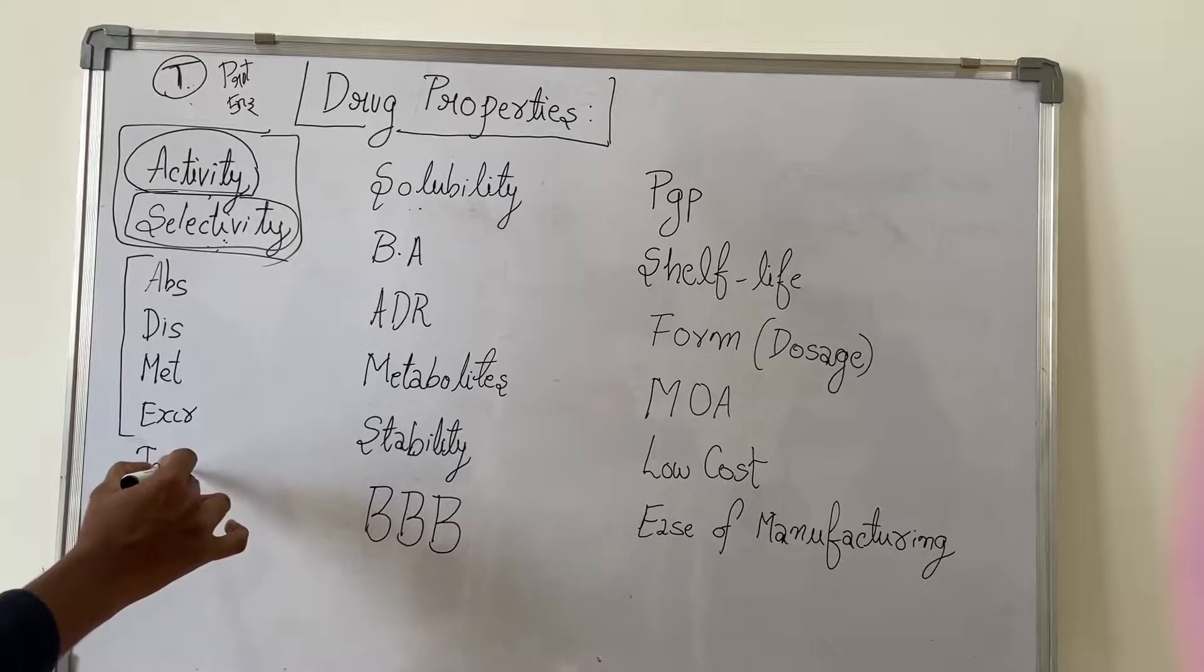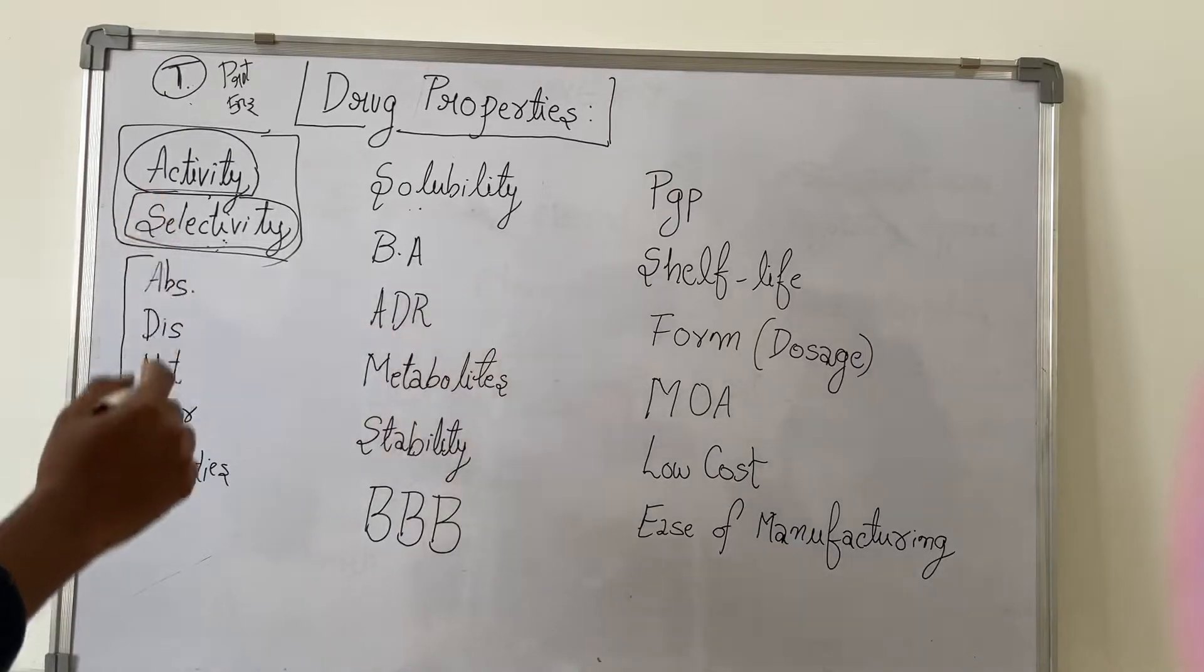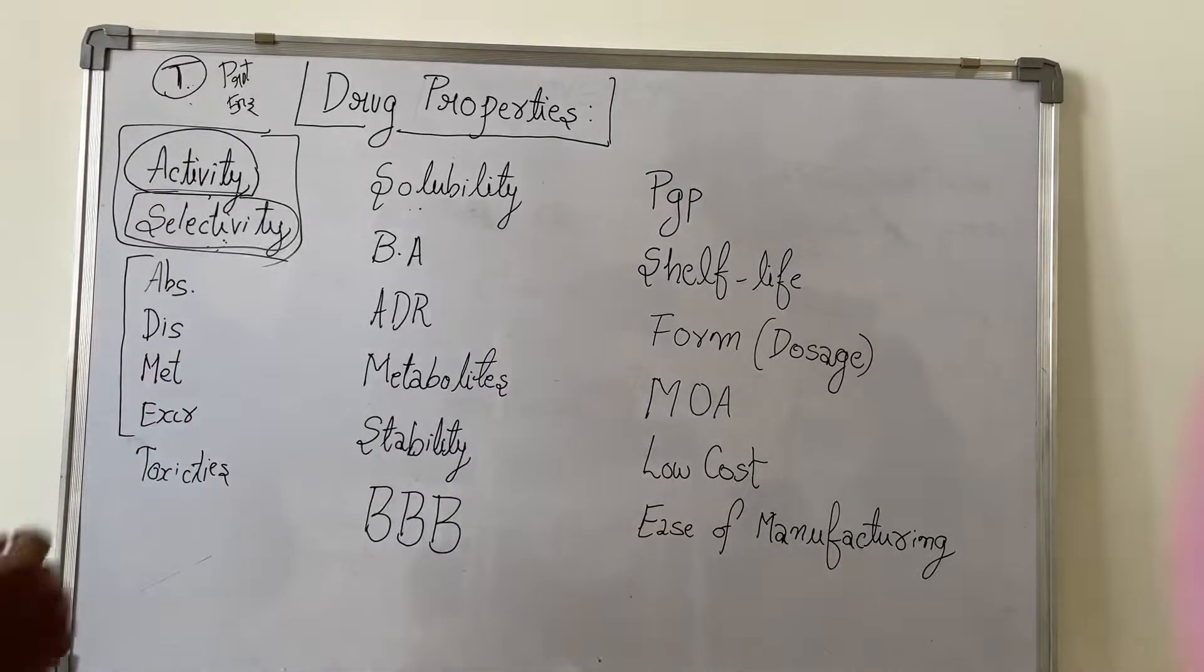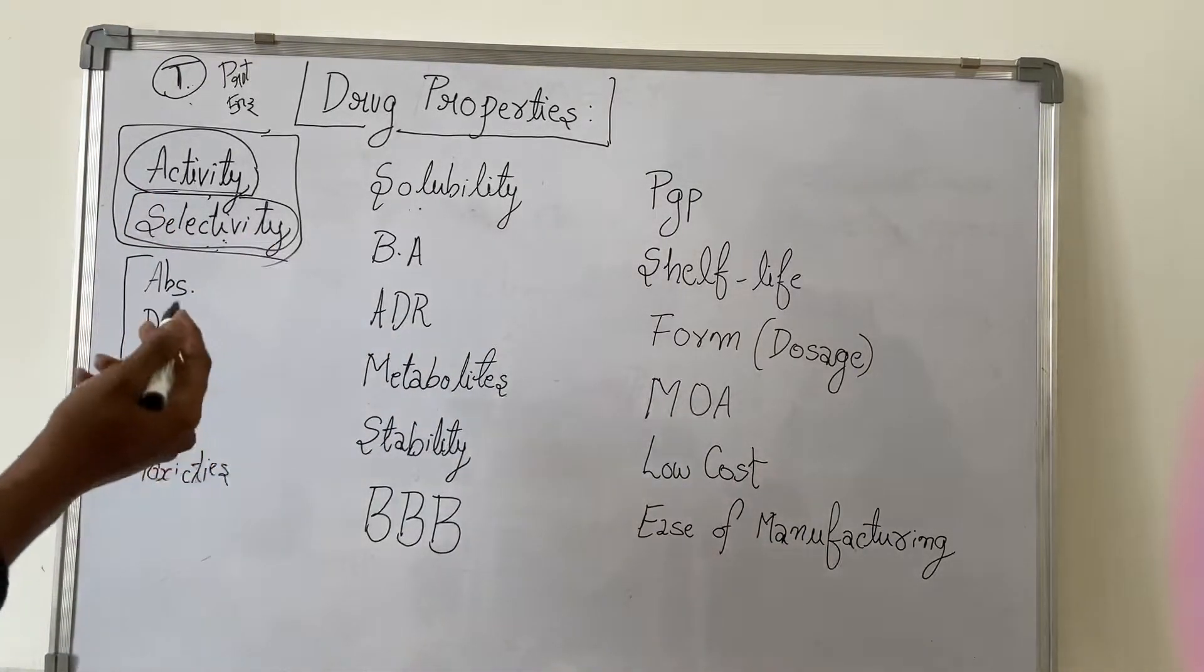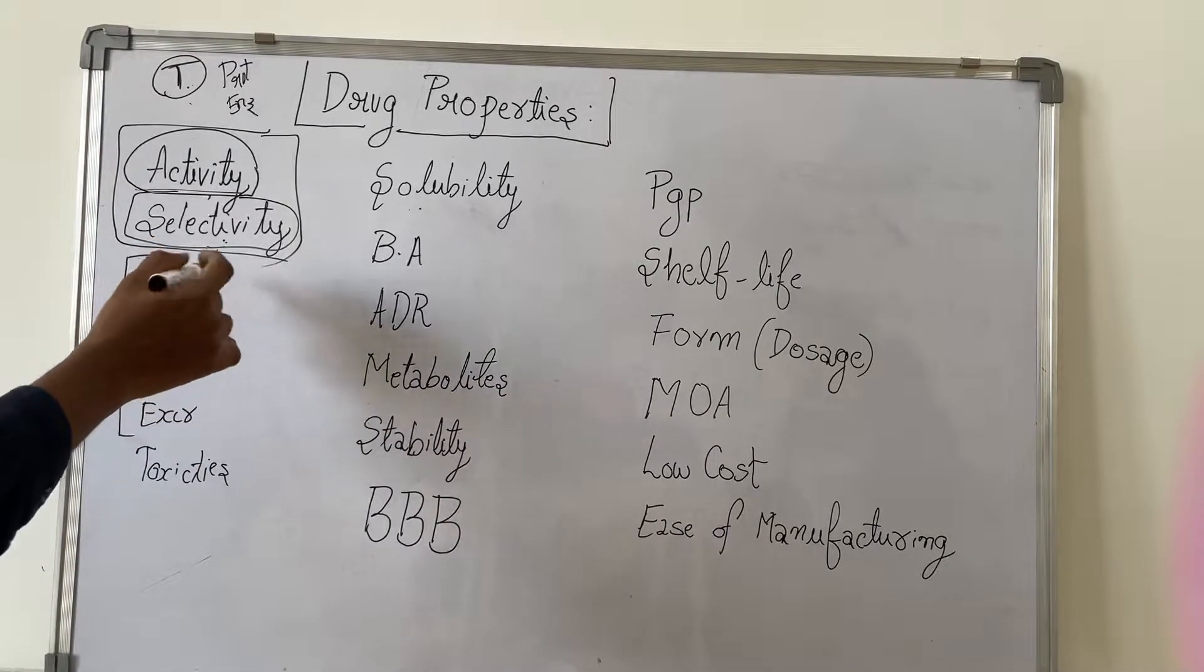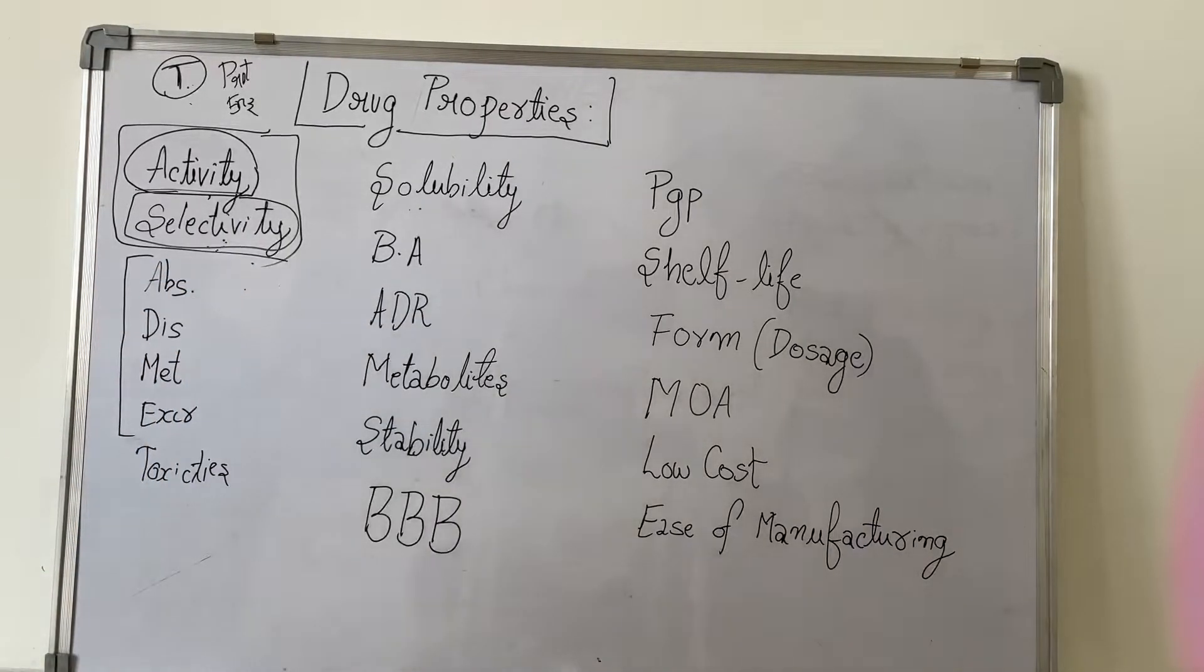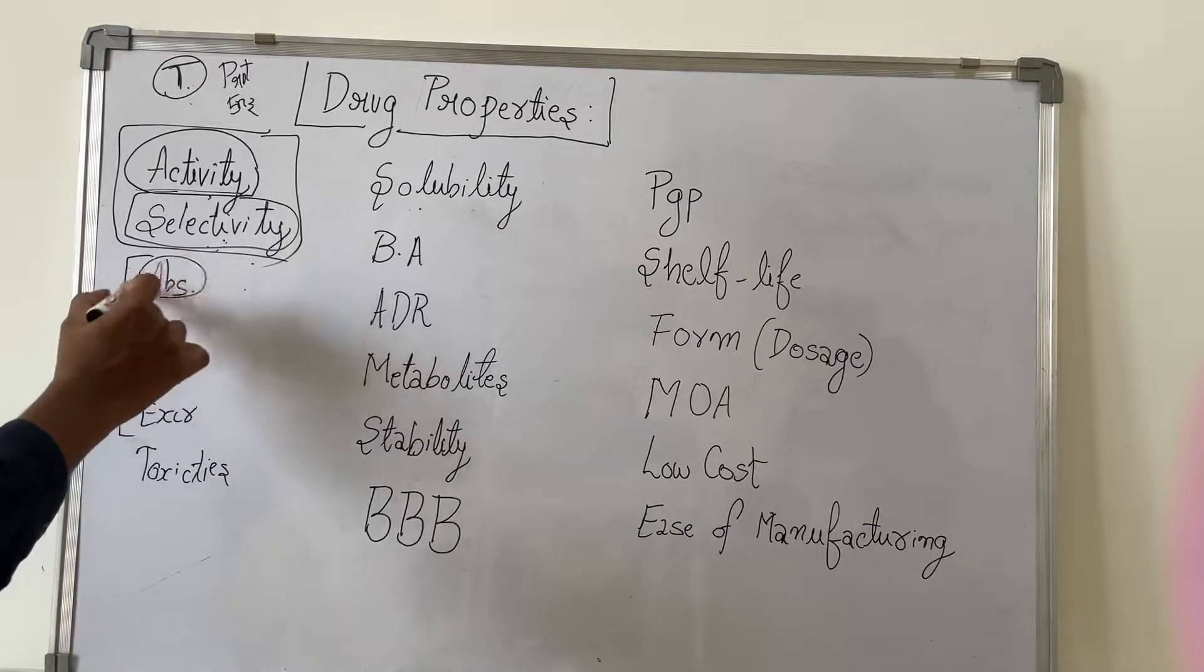First one is absorption. How the drug is being absorbed depends on the route of administration. For example, if we give a drug orally, we will check absorption through the gastric route, how much it is being absorbed in the small intestine. Depending on this, we will check the absorption.